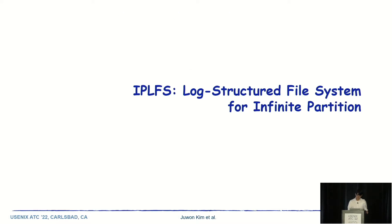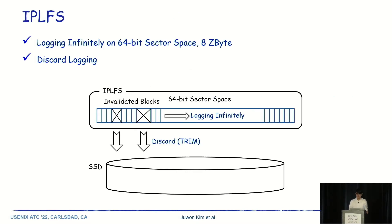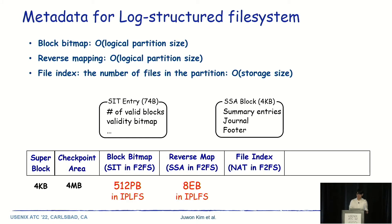Let's take a look at IPLFS first. IPLFS appends on a 64-bit sector space without garbage collection. At the same time, IPLFS dispatches discard commands to storage for invalidated blocks. IPLFS performs a unique operation named discard logging, which I will talk about later. The IPLFS is built on F2FS, one of the legacy log-structure file systems. F2FS has three major metadata: block bitmap, reverse mapping, and file index. The sizes of block bitmap and reverse mapping are proportional to the logical partition size.